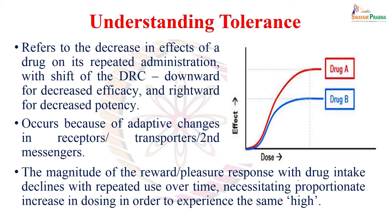Tolerance refers to the decrease in effects of a drug on its repeated administration. We can understand this through a dose-response or log dose-response curve: the efficacy — or maximal effect — is lowered, and the potency is also decreased. If potency is decreased, the log dose-response curve shifts to the right; if efficacy is decreased, the ceiling or maximal effect is reduced.